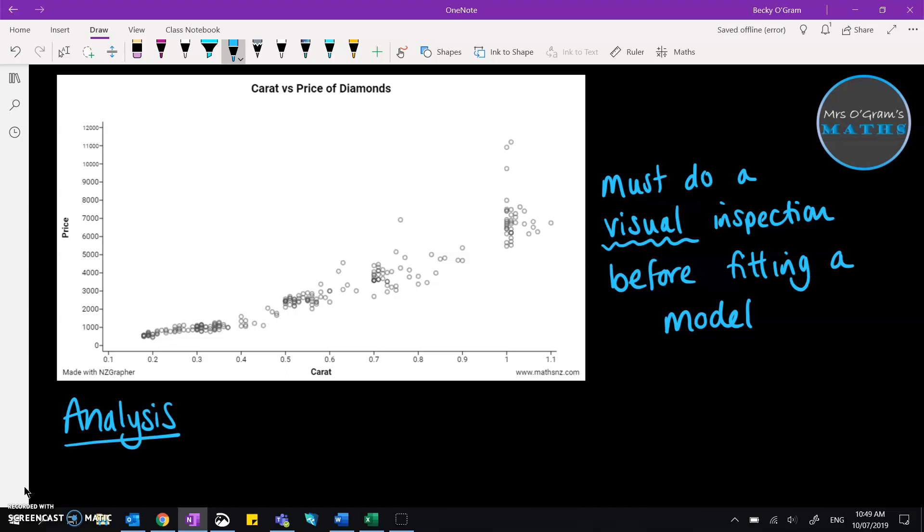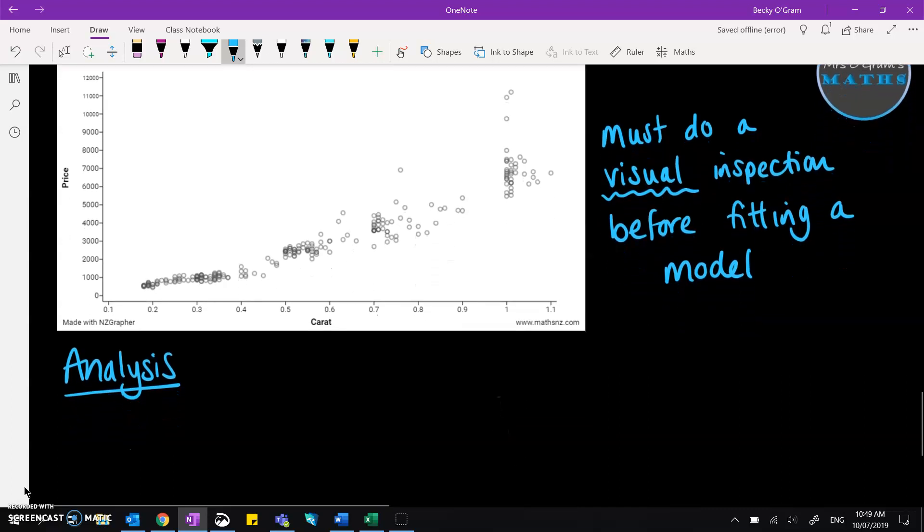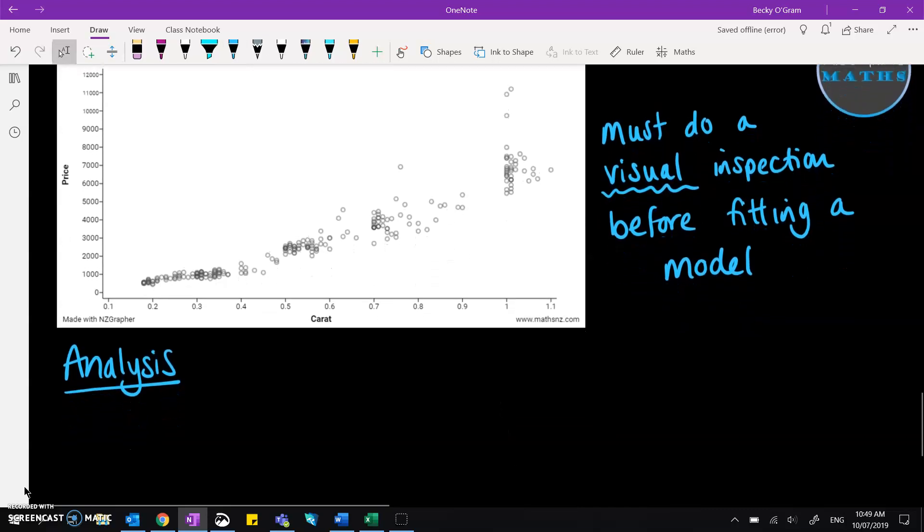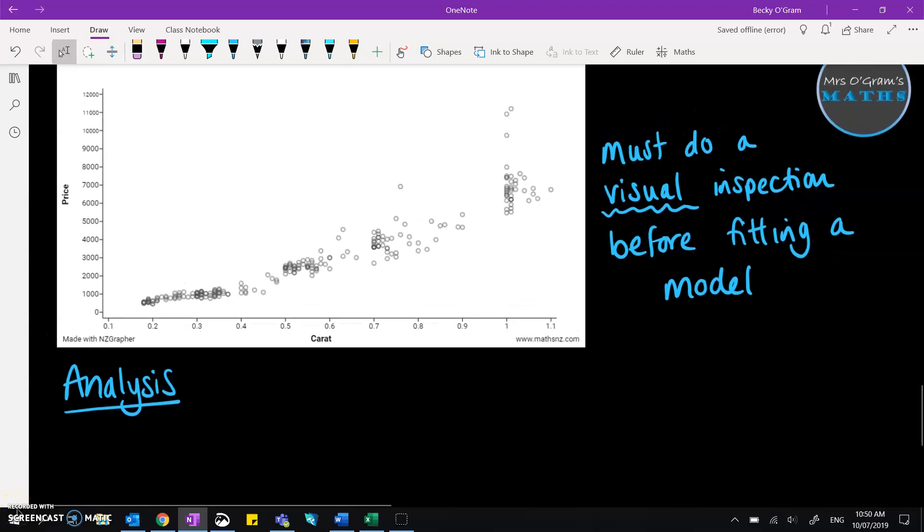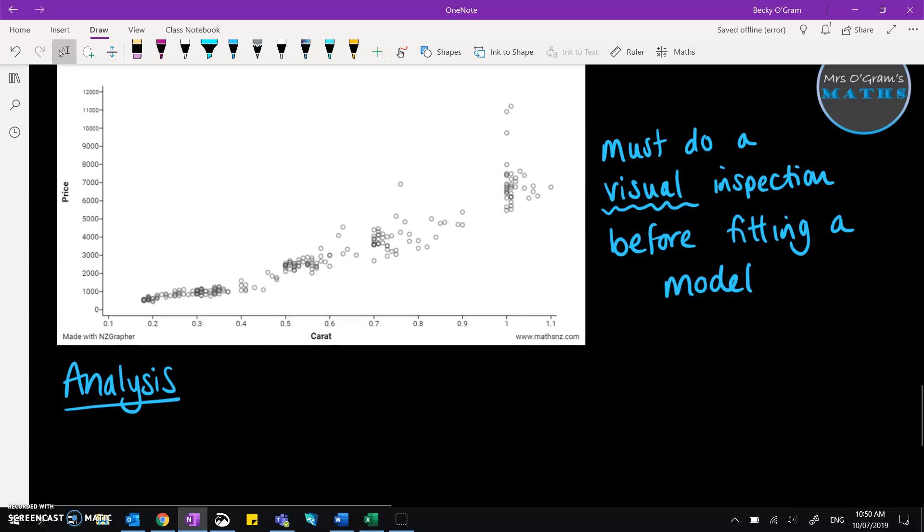So let's start with our analysis and I'll keep flicking back up to this graph as we need it and do the writing underneath. So the first thing is to look at the strength and the direction of the line. So how closely those dots are to each other, whether they follow the same sort of line or not. And then also the direction, whether it's positive,